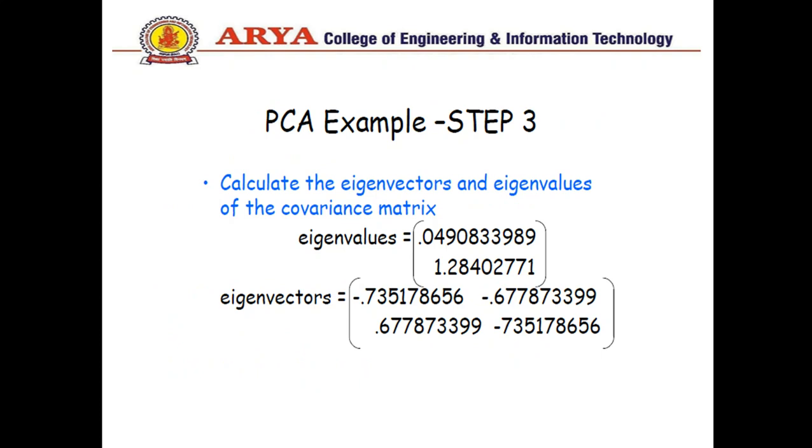When we solve covariance matrix we find eigenvectors and eigenvalues. First of all we calculate eigenvalues. Eigenvalues can be calculated by the formula C minus lambda I. By using determinant you can solve and get two values of lambdas, lambda 1 and lambda 2. It will be for lambda 1, 0.4908 and for lambda 2, 1.2840.